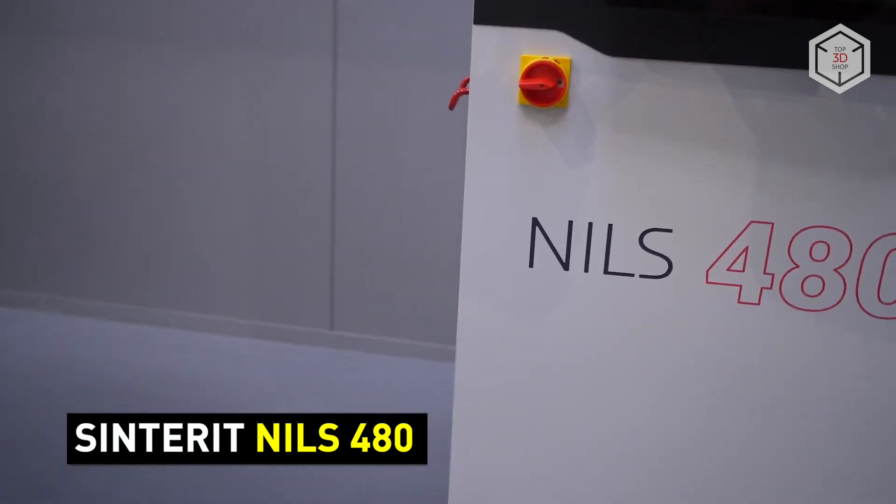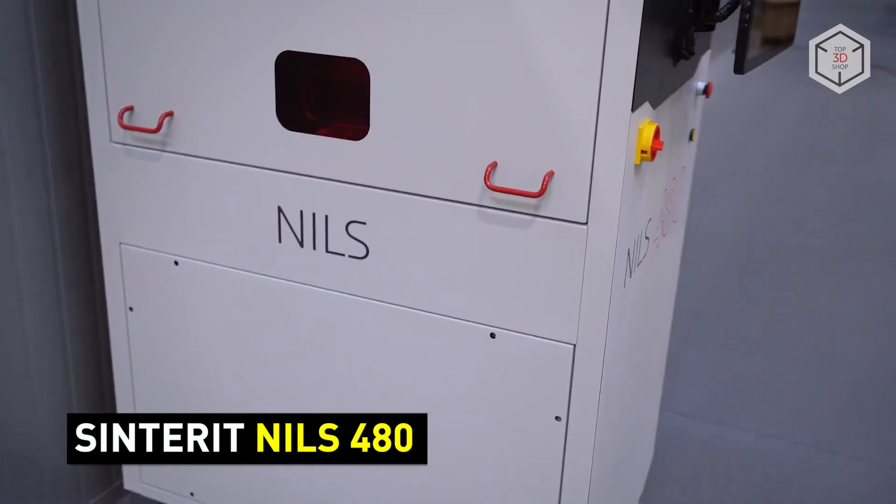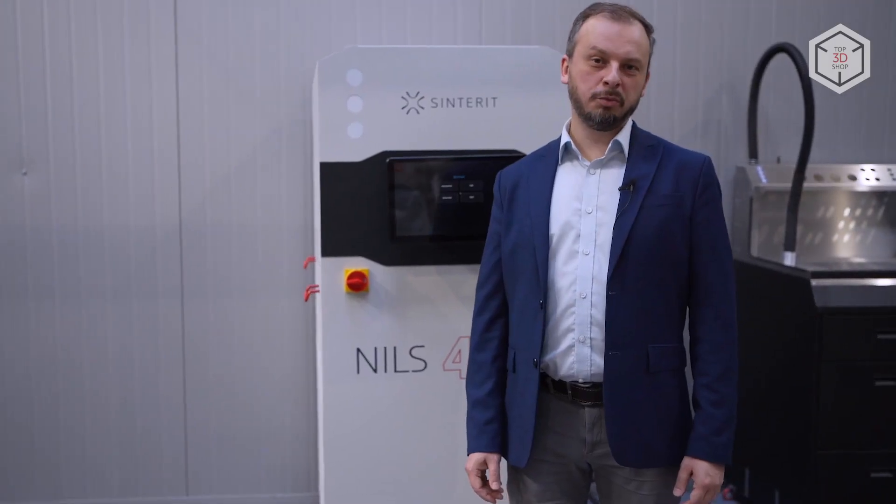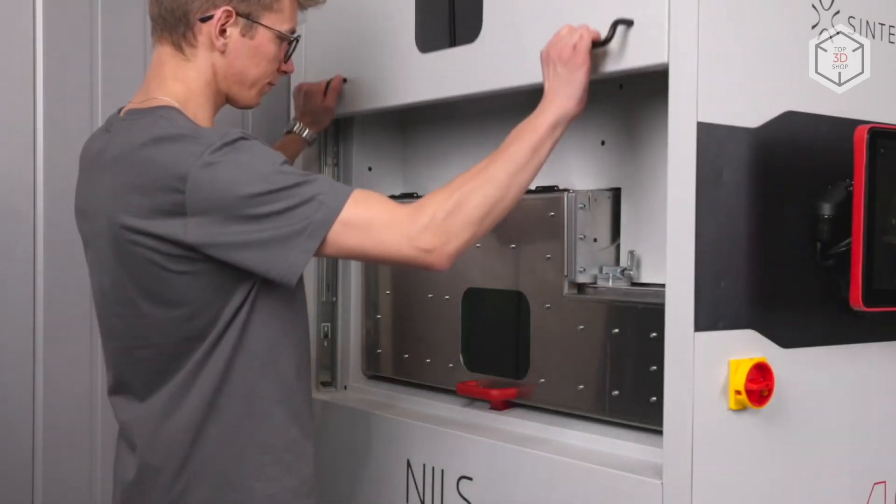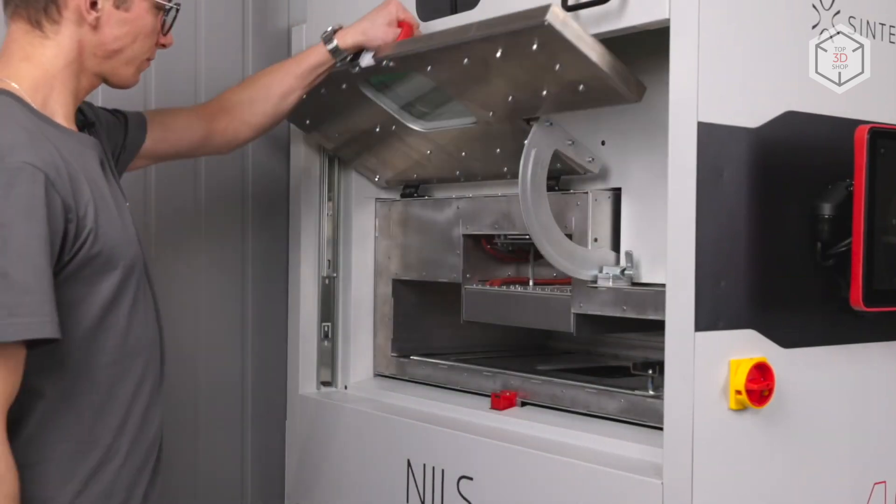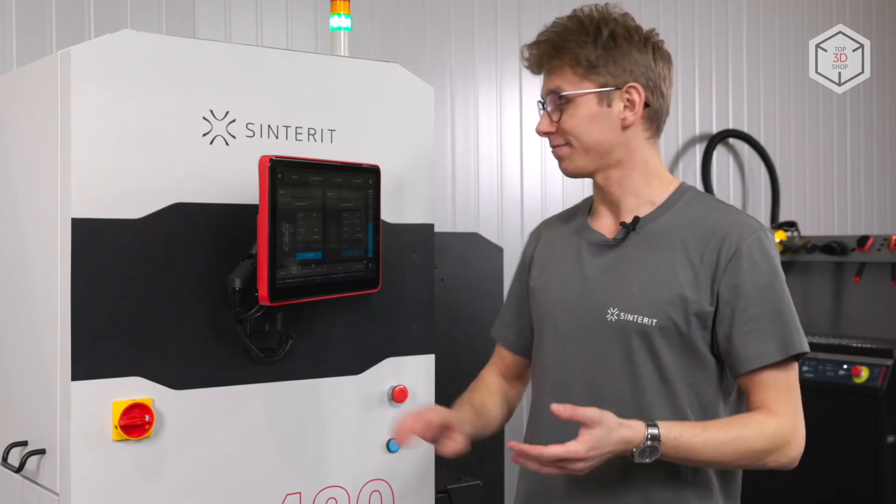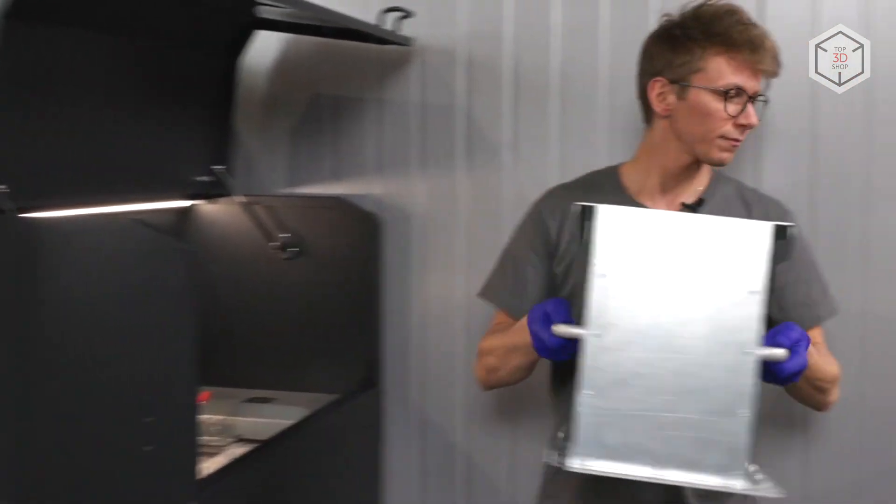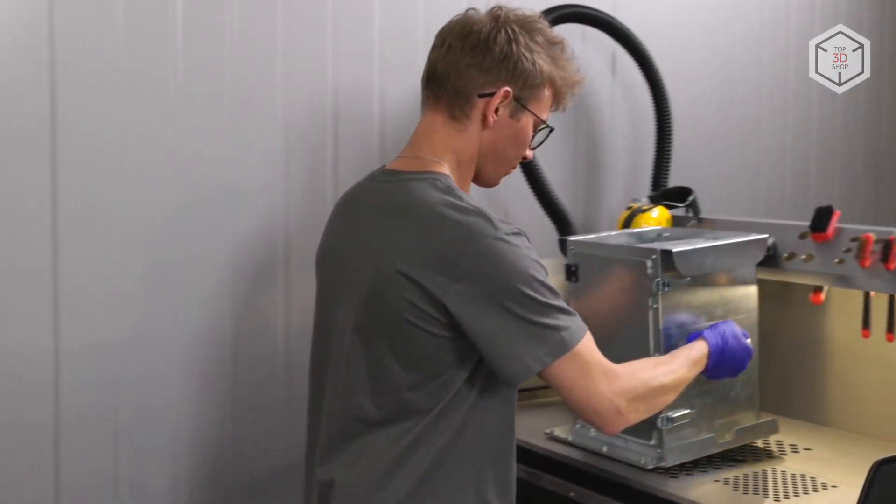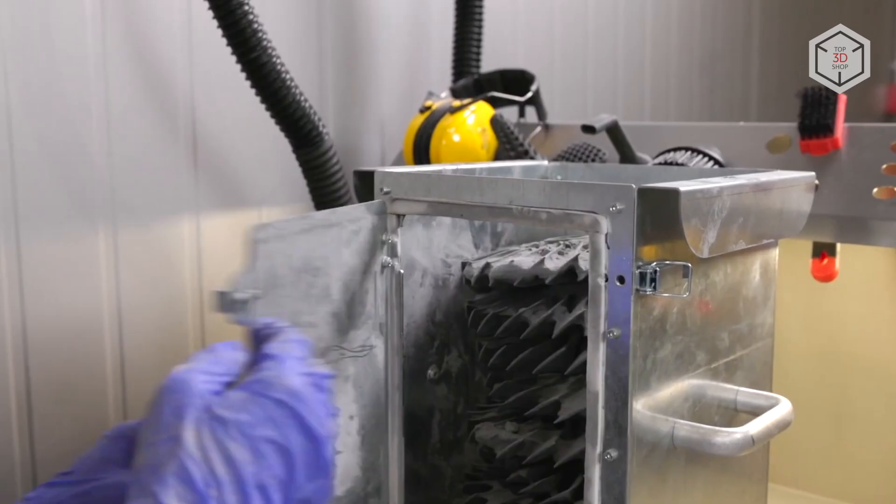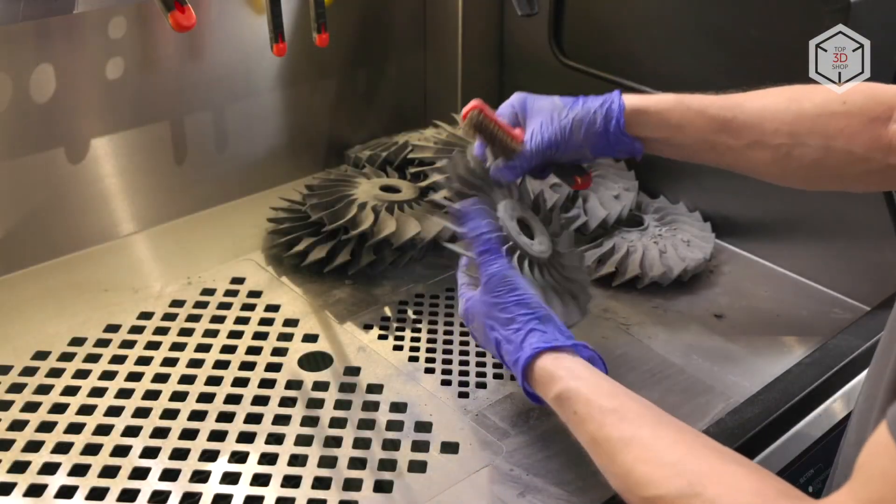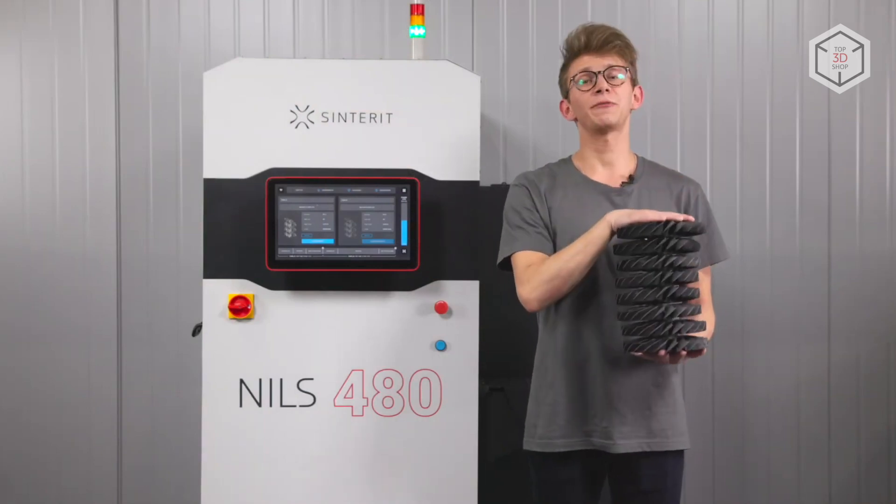The Sinterit Nils 480 features industrial printing speed and a large build volume, alongside such automated systems as continuous printing and automatic powder dispensing, which makes the Nils 480 one of the most cost-effective models in its class. The high print speed allows printing the full bed in less than 30 hours. The printer is compatible with a wide range of printing powders, including those produced by third-party manufacturers. Besides offering optimized profiles for all proprietary materials, the Nils 480 allows creating user profiles to achieve the best results with any material being used.